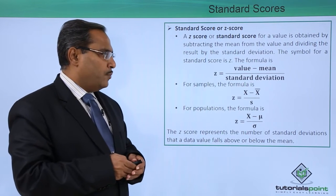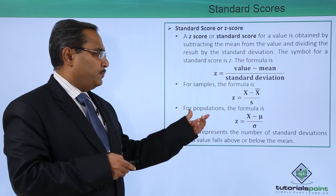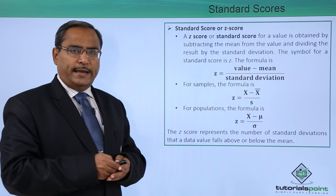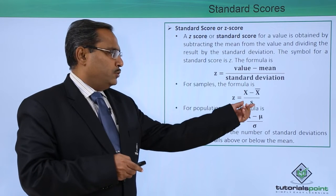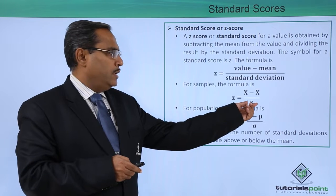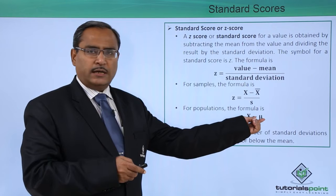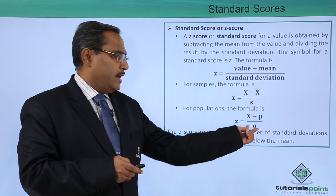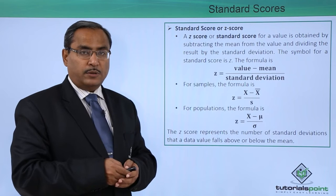For samples, the formula is x minus x-bar divided by s. For populations, the formula is x minus mu divided by sigma. Here s stands for the standard deviation for sample and x-bar is the mean for the sample. Similarly, mu is the mean for the population and sigma is the standard deviation for the population.